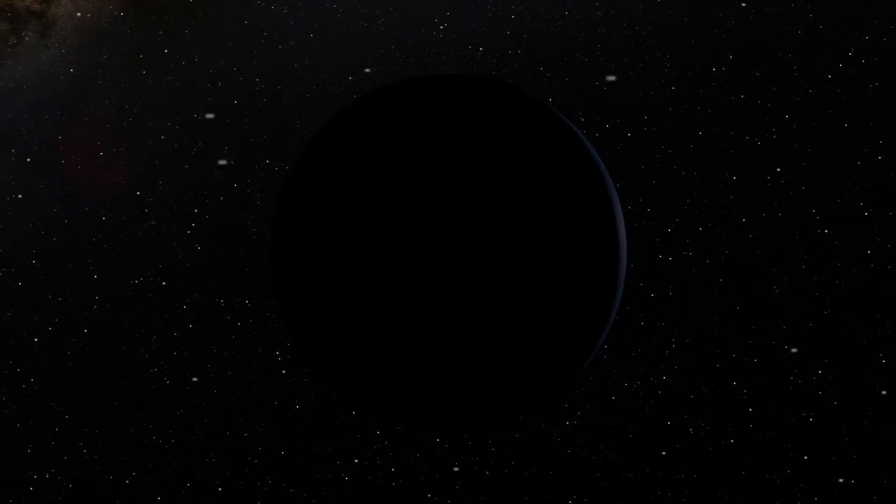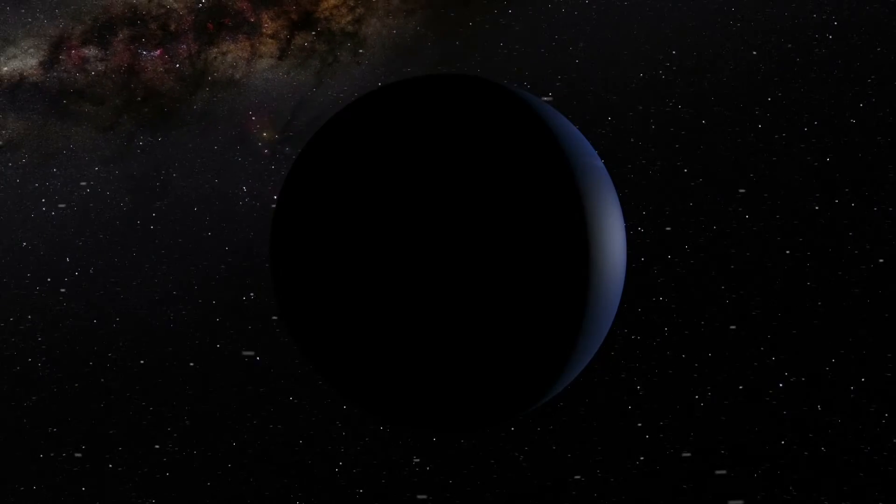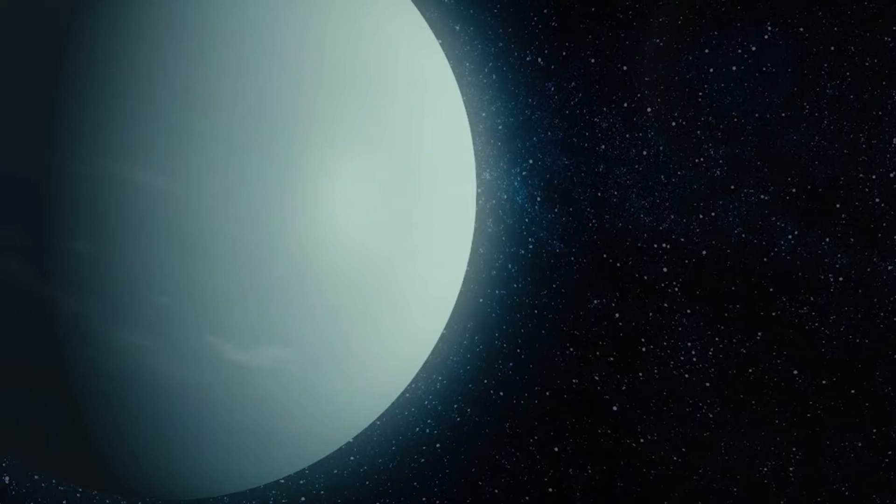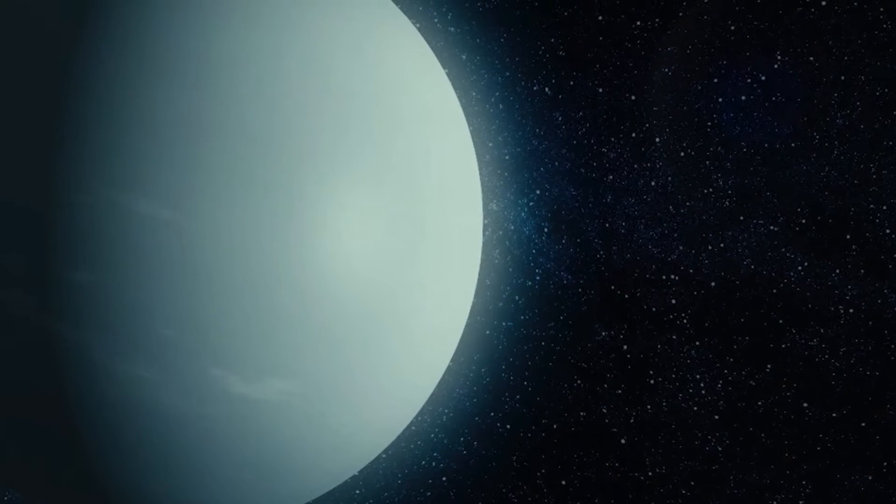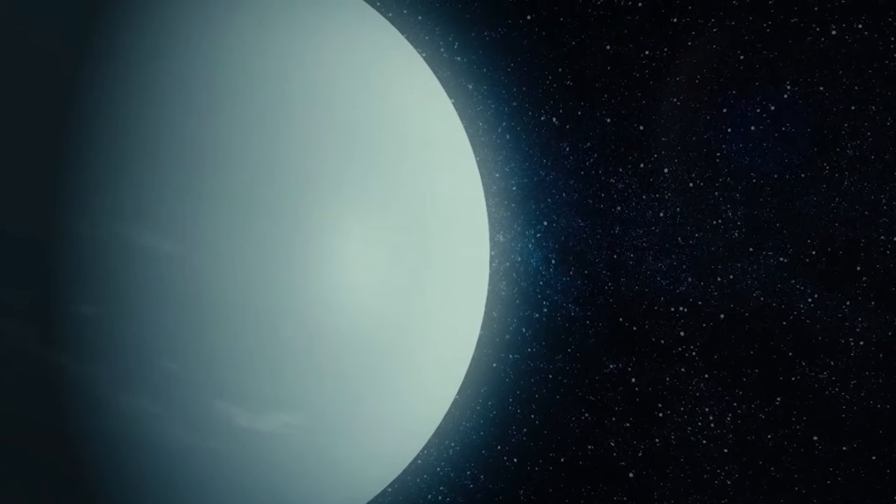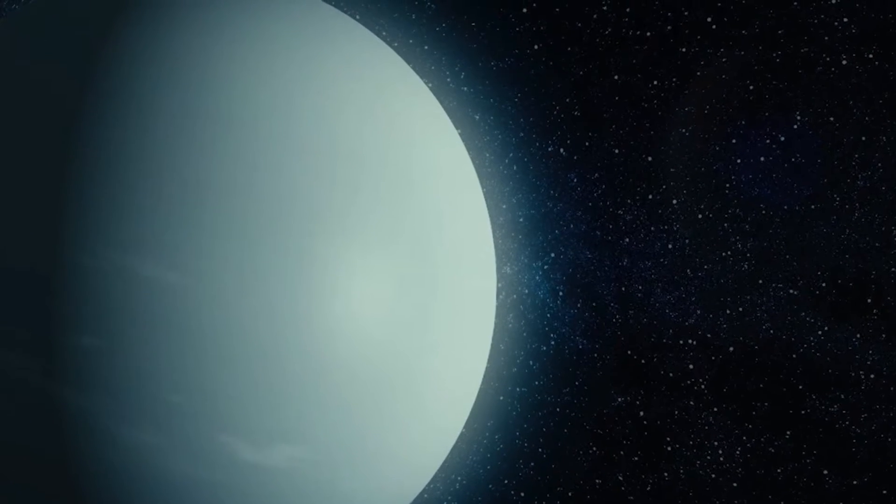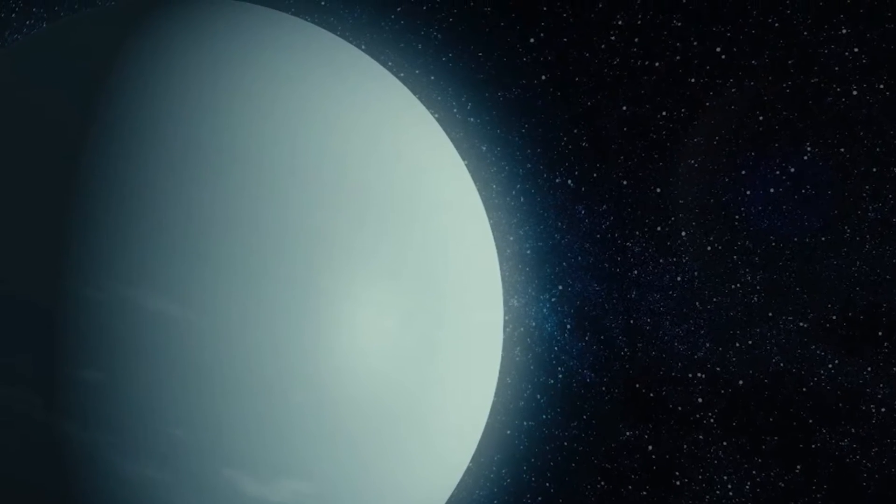Another planet competing with Uranus for the title of the coldest place in the solar system is Neptune, which is on average 4.5 billion kilometers away. Neptune has temperatures of minus 214 degrees Celsius. Sometimes, but not always, Uranus is the coldest of all planets.